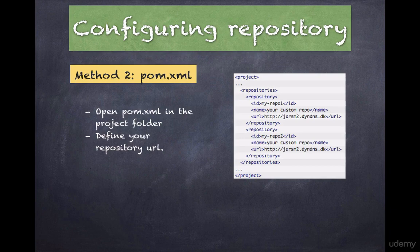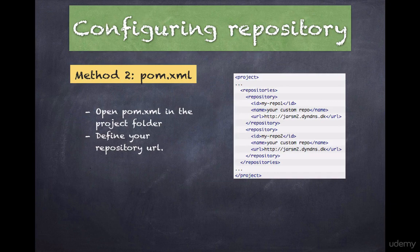But the problem with this approach is that when artifacts are released, the corresponding pom.xml will have the repository information hard-coded in them. If the repository URLs were ever to change, consumers of these artifacts will run into errors due to broken repository paths.